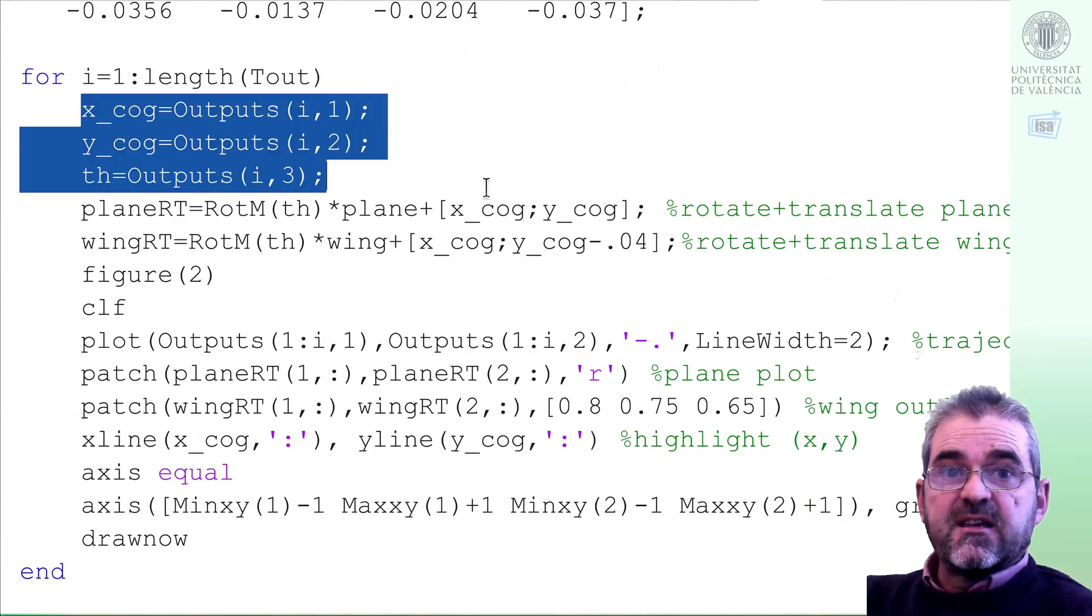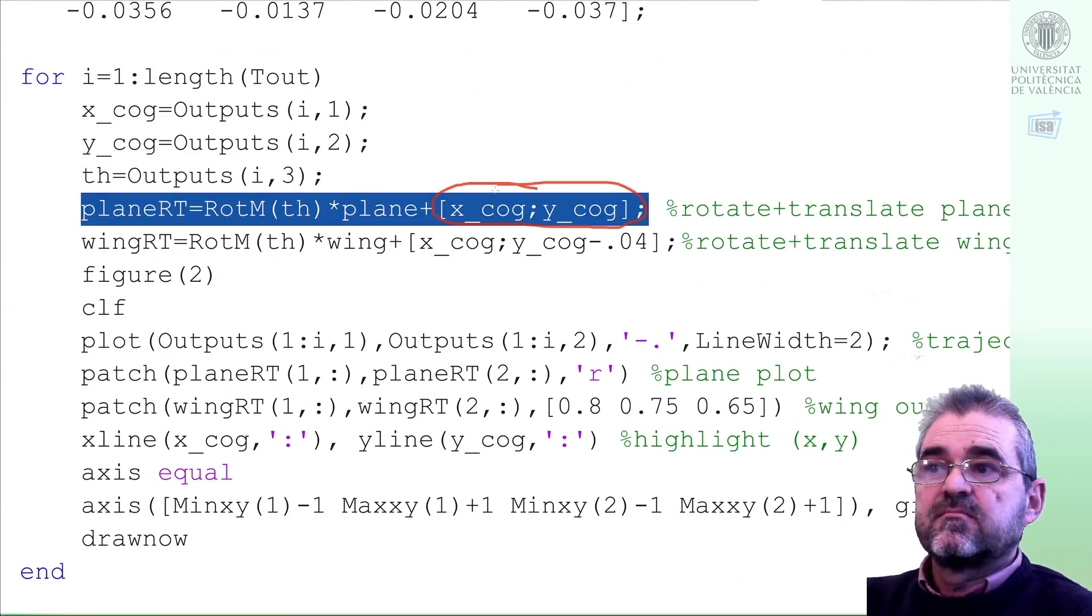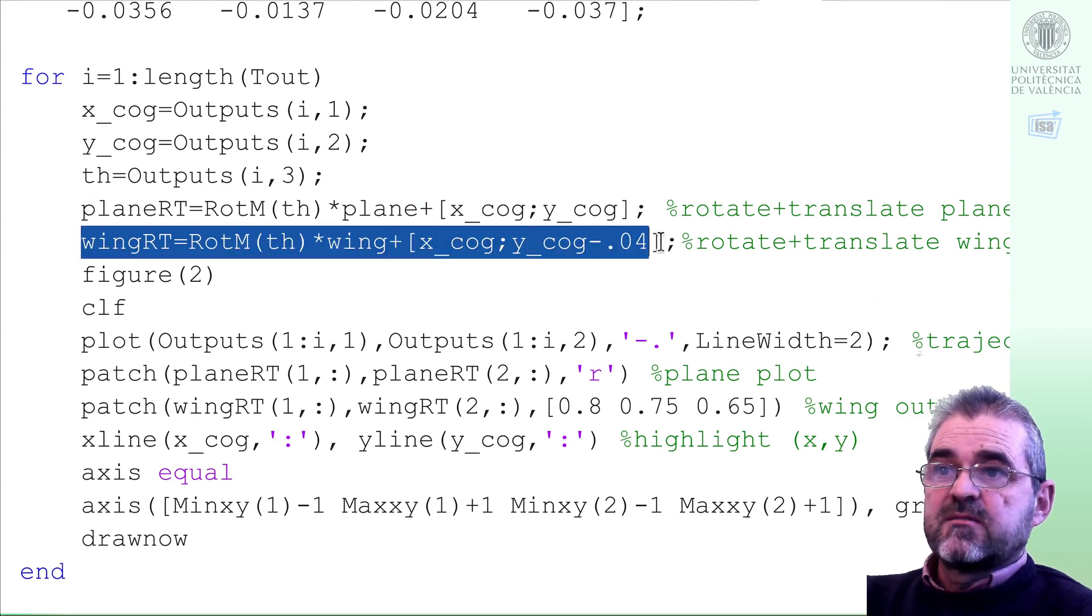So this for loop is the main animation loop. First we get x, y, and theta for each frame. This line translates, adding to the positions the center of gravity position, and rotates the plane outline and angle theta. And likewise, translation and rotation of the wing outline so that it's drawn in the correct place and orientation.